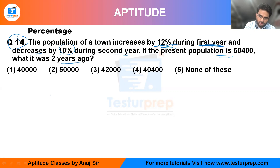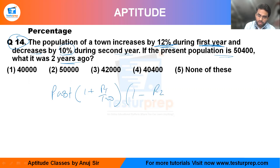We know that the past population, increased with r1, becomes: past × (1 + r1/100). After that it is decreased with r2, and the final value becomes the present population. We know this formula.